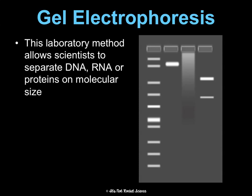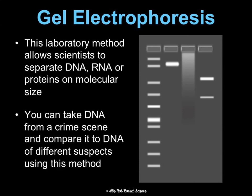Gel electrophoresis is a lab method that allows scientists to separate DNA, RNA, or proteins by molecular size. This is useful because we can take DNA from a crime scene and use this process to compare it to DNA of different suspects to see if the bands match up — if the bands match, you have a DNA match. This is related to genetic engineering because we wouldn't be able to do this if we didn't know as much about genes and their locations on chromosomes.